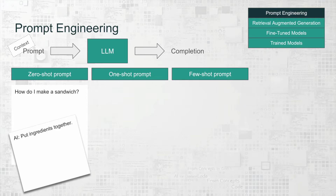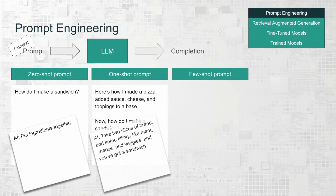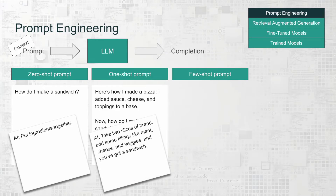Now let's take a look at a one-shot prompt. Here we would give the prompt providing an example: here's how I made a pizza — I added sauce, cheese, and toppings to a base. Now, how do I make a sandwich? In that case, AI could respond: take two slices of bread, add some filling like meat, cheese, and veggies, and you've got a sandwich. A bit more direction here, right?